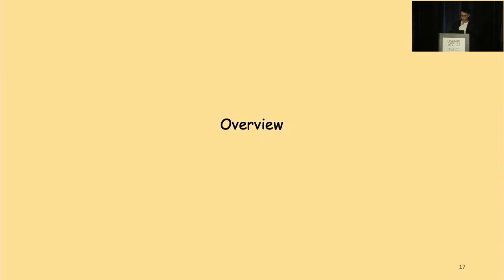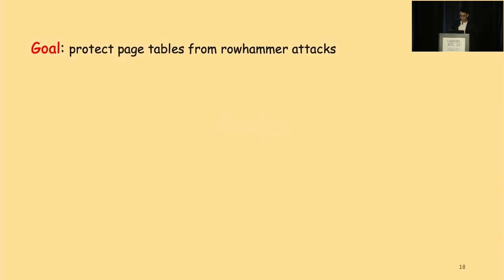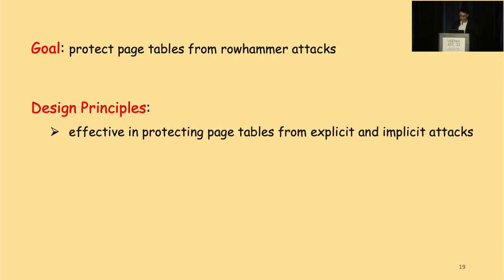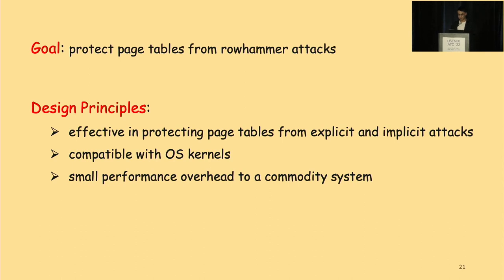For our work, we aim to protect page tables from Rowhammer attacks while addressing the two limitations of existing works. We have three design principles. First, we need to be effective enough in protecting page tables from both explicit and implicit attacks. Second, we need to be compatible with OS kernels — we do not modify kernel source code or break kernel code integrity through binary instrumentation. Last, our approach should incur small performance overhead on commodity systems.